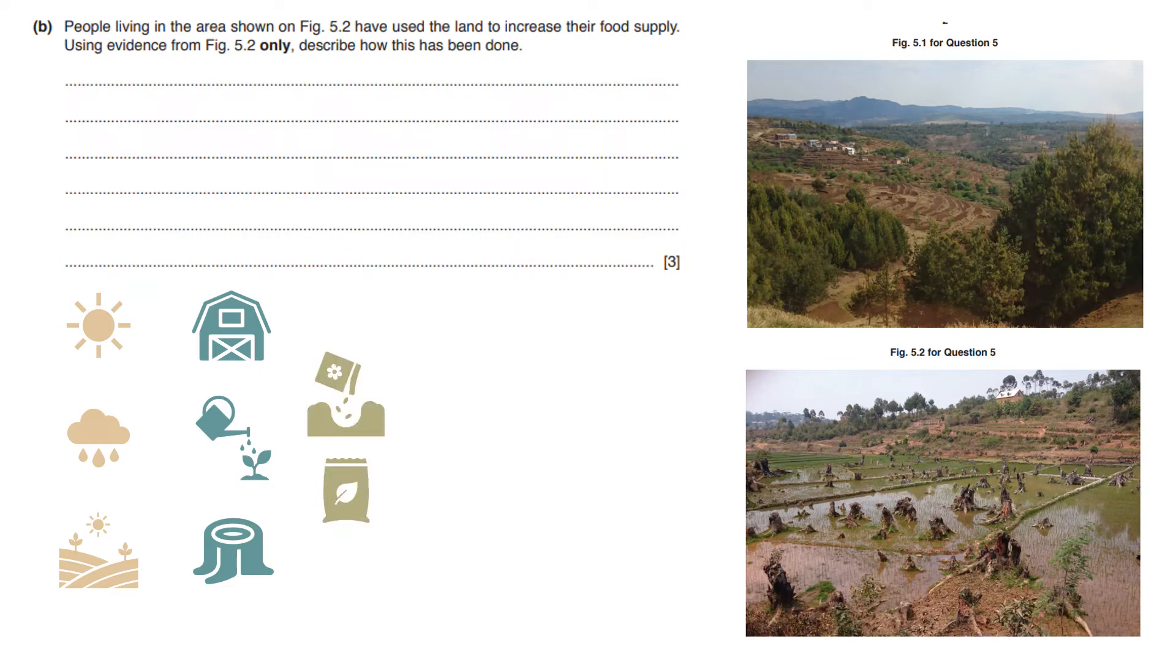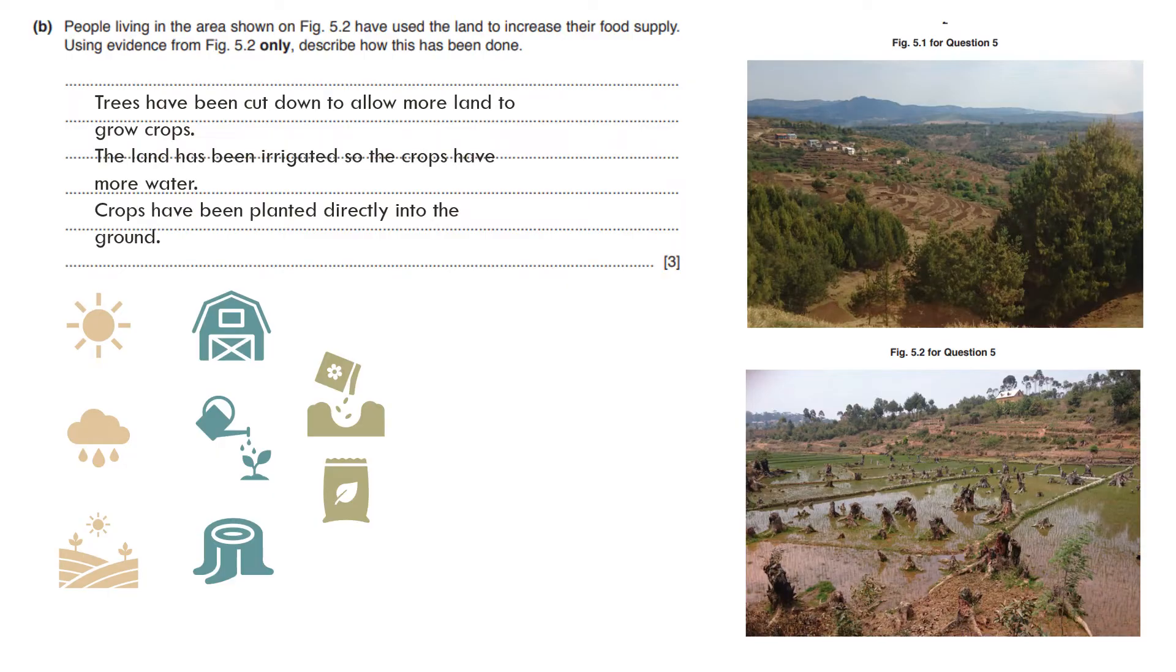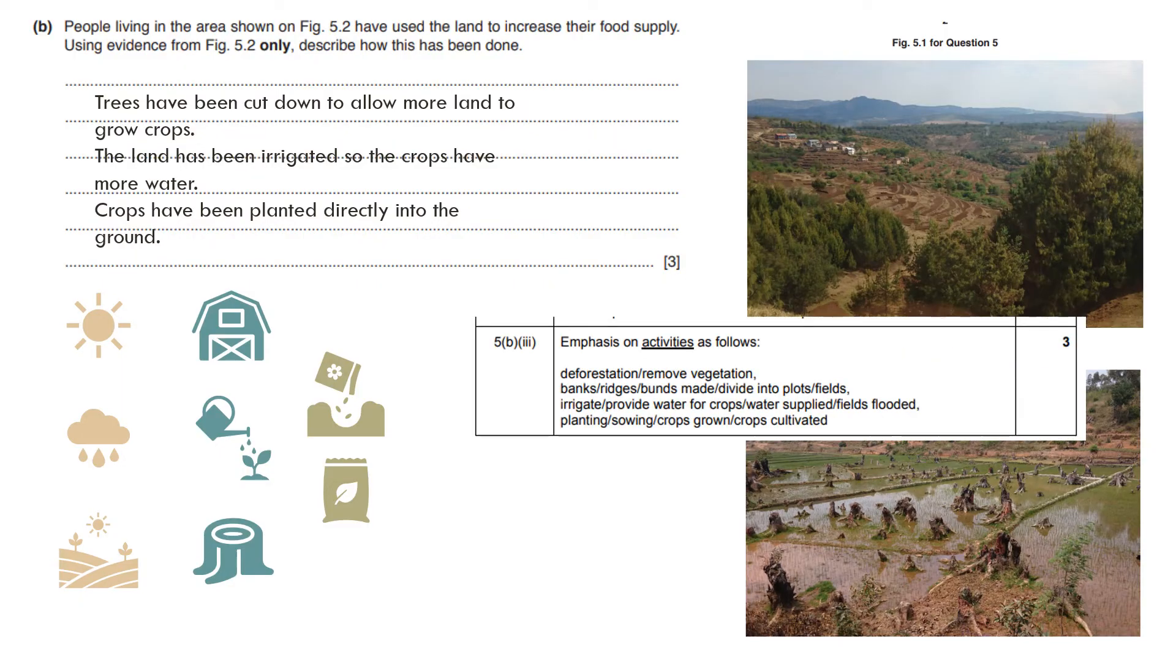Alternatively you can plant genetically modified seeds or you use fertilizers. We can see that trees have been cut down to allow more land to grow crops. The land has been irrigated so the crops have more water and crops have been planted directly into the ground. They haven't put seeds into the ground, they've directly planted crops. The activities means you have to tell me what action has happened, what processes have happened.